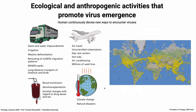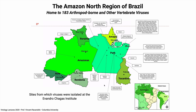These are the ways we've devised to encounter new viruses, but that's not enough — there are two big components of emergence. One is encounter; the other is genetic diversity. For example, in the Amazon North region of Brazil, over 183 arthropod-borne and other vertebrate viruses are known to inhabit animals in this area, including dengue virus serotypes and many other exotic viruses in different locations.